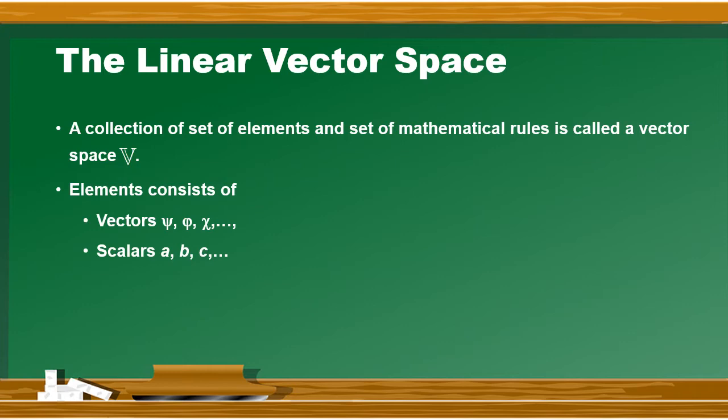और दूसरा set होगा scalars का. Scalars होंगे A, B, C - इस तरह से इसको लिखा जा सकता है. Even इसको A1, A2, A3 and so on इस तरह से लिखा जा सकता है. इसके different notations possible हैं. तो in short हम यह कह सकते हैं कि यहां पर दो sets होंगे elements के - एक vectors का set होगा और दूसरा scalars का set होगा.